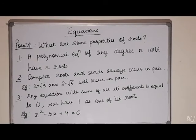What are some properties of roots? First property is, a polynomial equation of any degree n will have n roots, real or imaginary. Complex roots always occur in pair. For example, if 2 plus root 5 is a root of any equation, then 2 minus root 5 will also be a root of that equation.